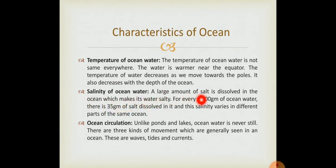Next feature is salinity of the ocean water. A large amount of salt is dissolved in the ocean which makes the water salty. For every thousand grams of ocean water, there is 35 grams of salt dissolved in it. And this salinity varies in different parts of the same ocean. Children, do not think that each and every part of the ocean has the same level of salinity. No, it varies. It is found that every 1000 grams of ocean water contains 35 grams of salt.